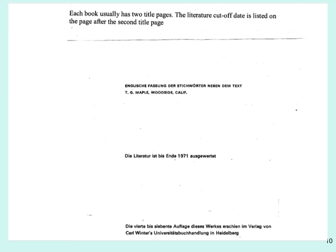Whenever you look at a book in the Gmelin series, you need to know what period of time the literature covers. You cannot just look at the book's publication date, because it takes time to gather, review, and publish the data — there is always a delay. Fortunately, there is an easy way: each book has two title pages, and when you turn over the second one, you see the word 'Literatur' followed by a year. For this book, literature is covered until 1971, which is much more important than the publication date.